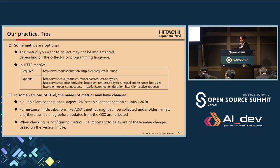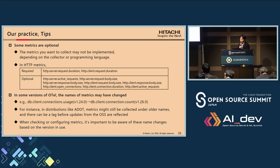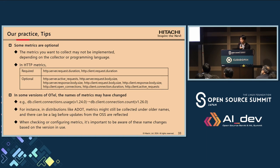The second point is to be aware that some metrics are optional. Even if a metric is listed in OpenTelemetry documentation, it may not be implemented in all languages or collectors. For example, with HTTP metrics, the only required metric is the one related to duration. The third point is that metric names may change depending on the OpenTelemetry version. For instance, 'db.client.connections.usage' was renamed to 'db.client.connection.count'. If you are using a distribution of OpenTelemetry, the latest changes may not be reflected and older names may still be in use. Pay attention to these name changes when retrieving or processing metrics with scripts.